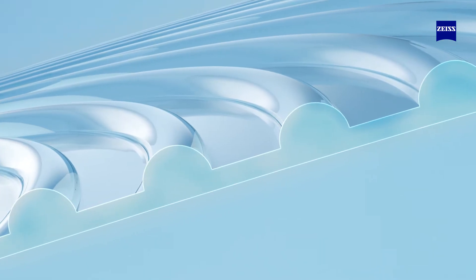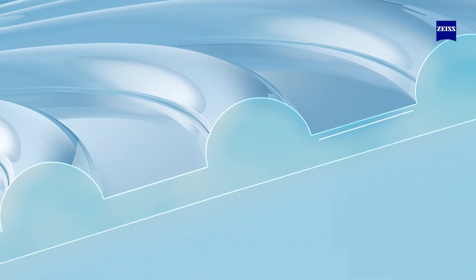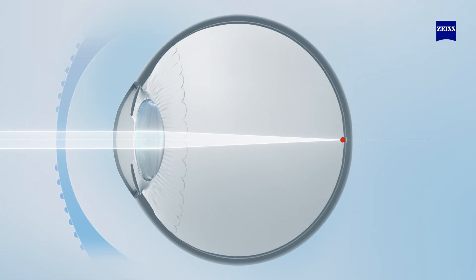Light bundles passing through the care elements of the ZEISS MyoCare lens are refracted to form a caustic area with an extended focus range that converges to a minimal waist and diverges again.